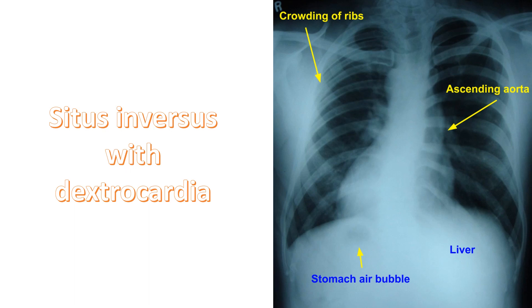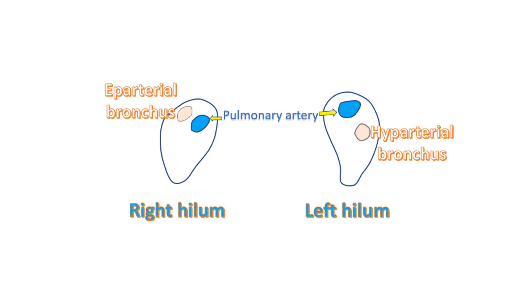In viscero-atrial concordance, atrial situs corresponds to that of the other viscera. If it is not so, it is called viscero-atrial discordance.